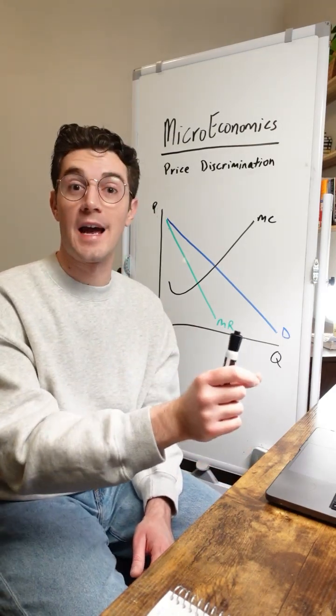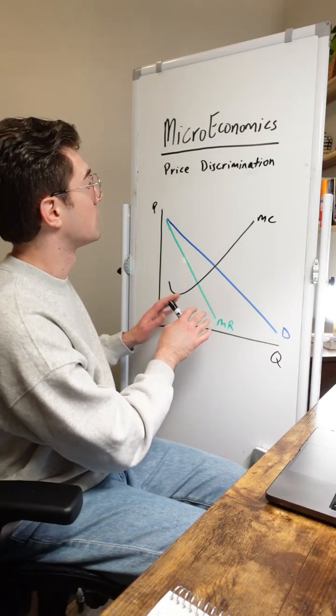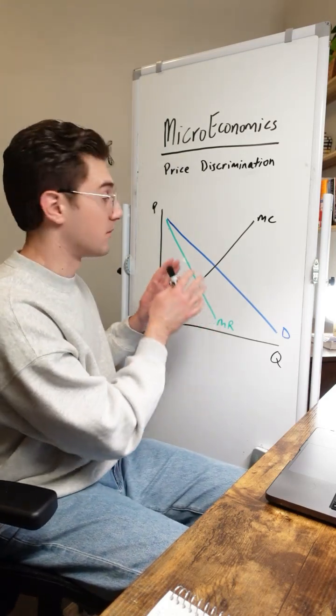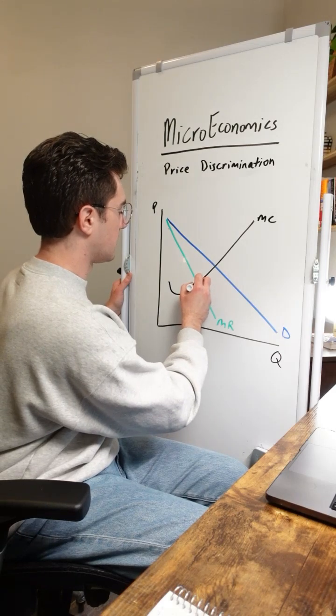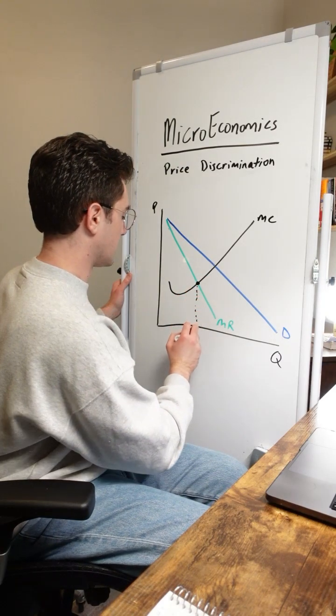Before we dig into what that actually means graphically, let's first understand how a non-discriminating monopoly would charge price. All we're going to do here is go to the MR equals MC point, meaning that we'll produce, we'll say, four units.